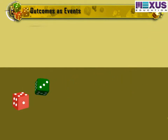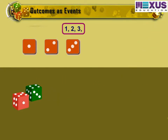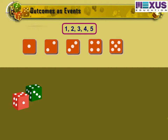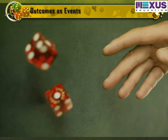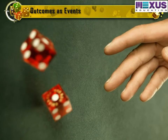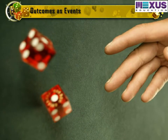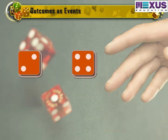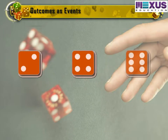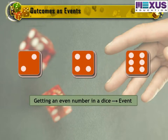In case of throwing a dice, getting each of the outcomes — one, two, three, four, five, or six — is an event. Is rolling an even number on a dice an event? Since an even number could be two, four, or six, getting an even number is also an event.